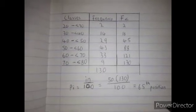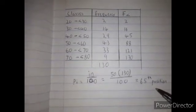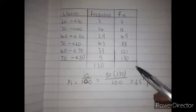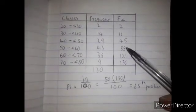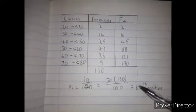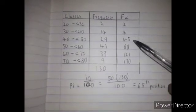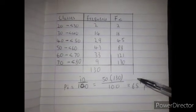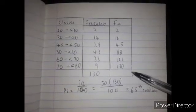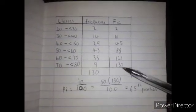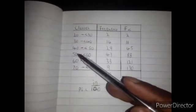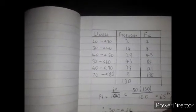Now, what is the percentile 50 interval or class? We have to find the first cumulative frequency that exceeds 65. Does 16 exceed 65? No. Does 45 exceed 65? No. Does 88 exceed 65? Yes, 88 is more than 65. So the 50th percentile is in the 50 to 60 interval.